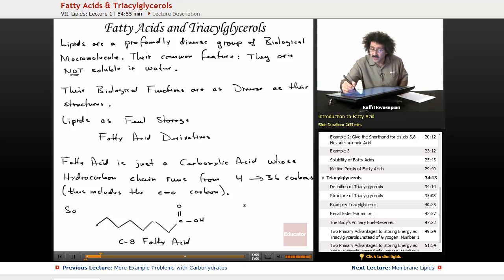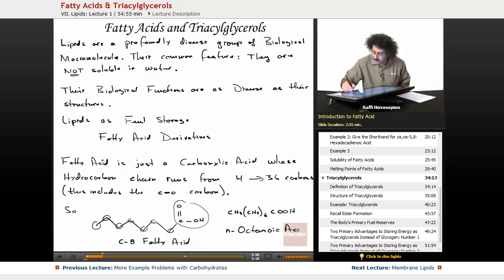We can write it as CH3, CH2-6, and then COOH. We have these CH2 groups - six of them - and then our carboxyl group. This is octanoic acid. That's how we name the carboxylic acids - propanoic acid, butanoic acid, pentanoic acid. We take pentane, hexane, heptane, octane, and just add oic acid. It's a carboxylic acid with just a really long carbon chain, generally from four to 36.